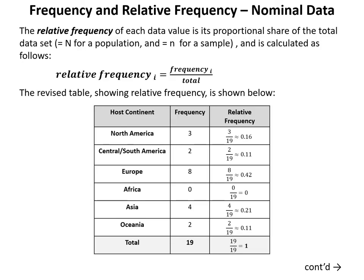Aside from the frequency, which is simply a count of the number of times each data value occurs, the relative frequency of each value is defined as its proportional share of the total data set. If it's a population the size is denoted capital N, and small n for a sample. The relative frequency for value i equals the frequency of value i divided by the total — essentially the proportional share of that value against the total number of data values.